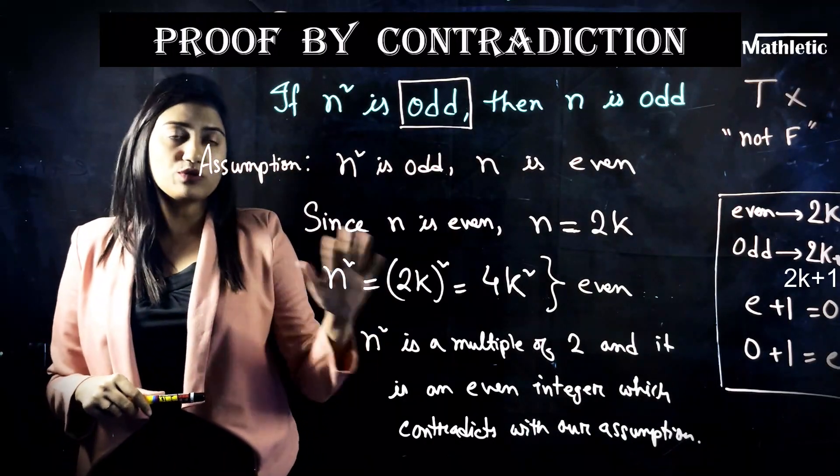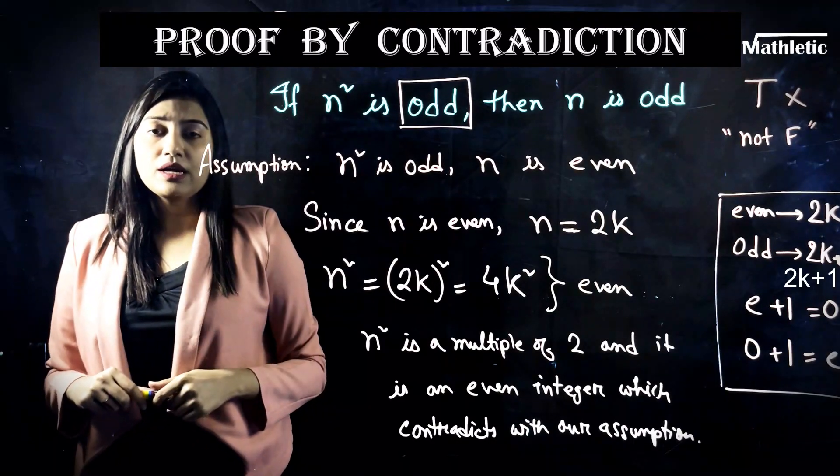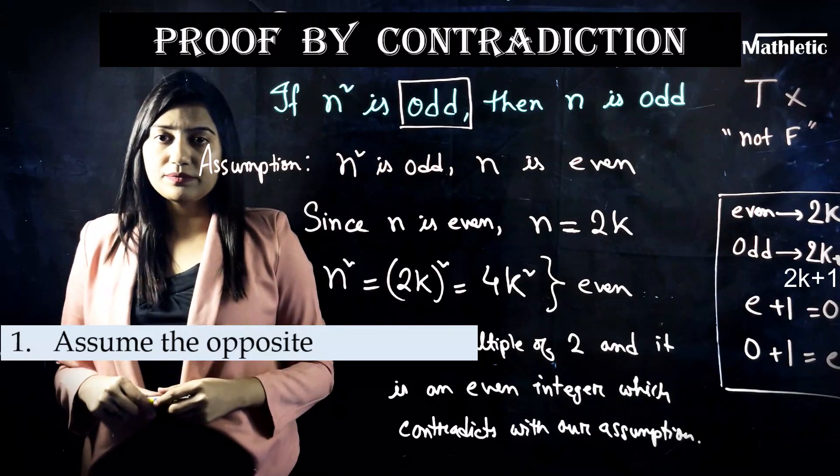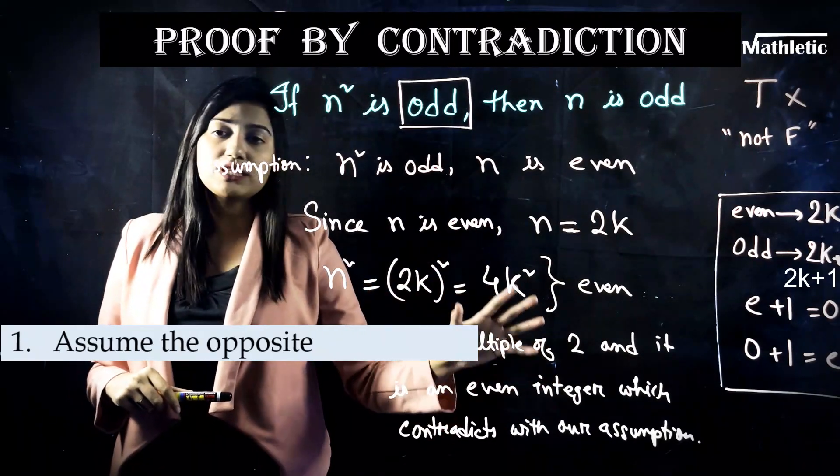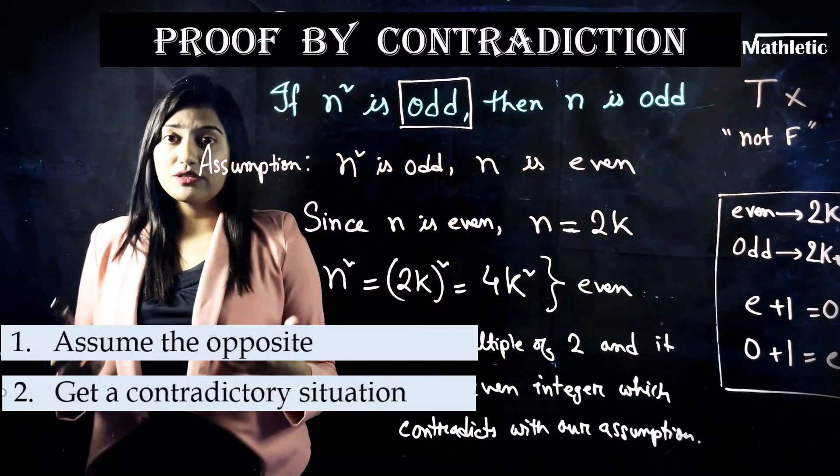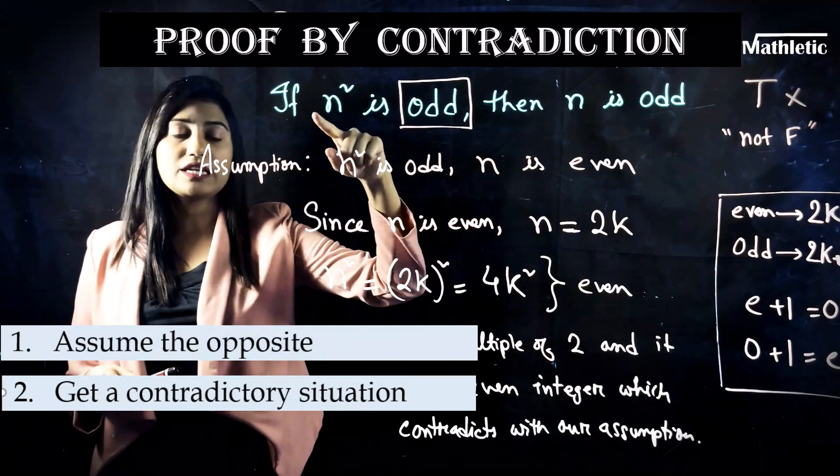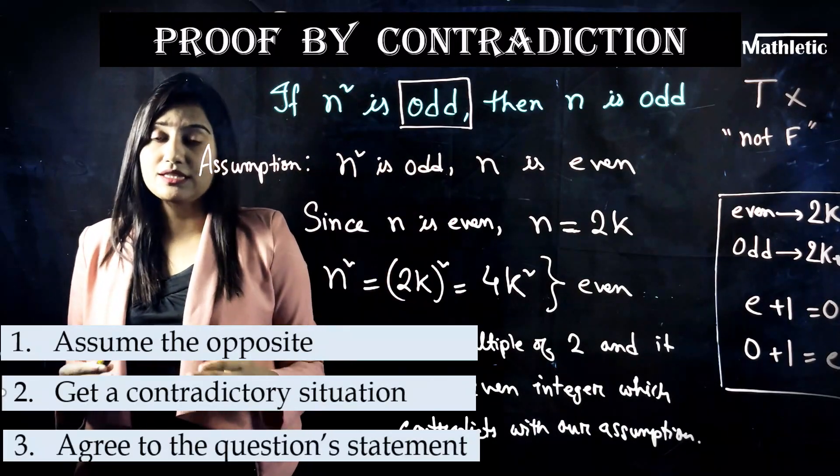You need 3 simple steps to prove anything by contradiction. First is to make an assumption, make an assumption which is opposite to the question. Second, you need to simplify and you will get a situation which actually contradicts with your initial assumption. That makes us wrong and eventually that proves that the initial statement in the question is actually correct. So you need to agree with the question. That's the third step.